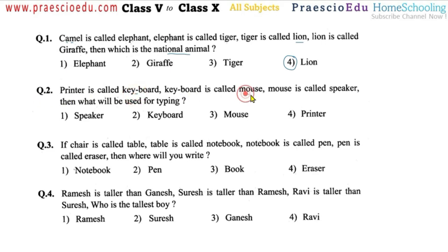Question number two: printer is called keyboard, keyboard is called mouse, mouse is called speaker — what will be used for typing? Typing is done by the keyboard, but the keyboard object is now not called keyboard — we are calling it mouse. So option number three is correct.